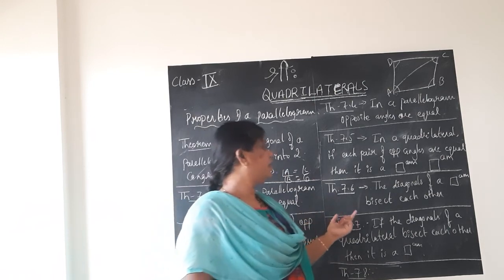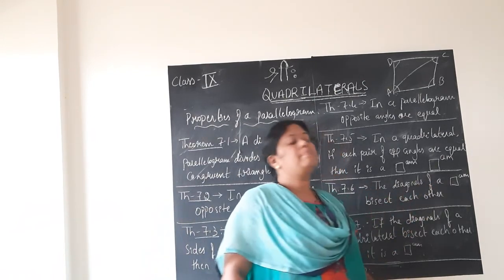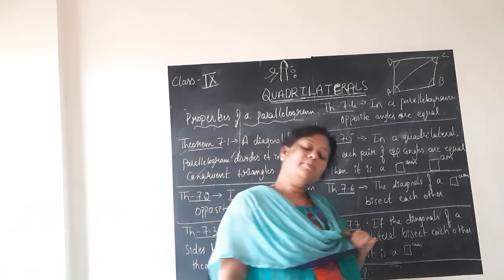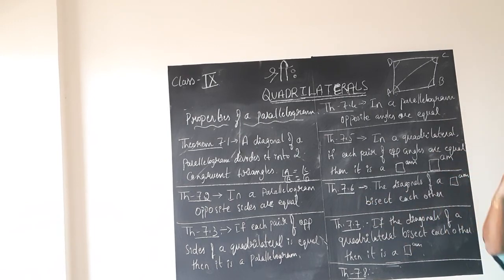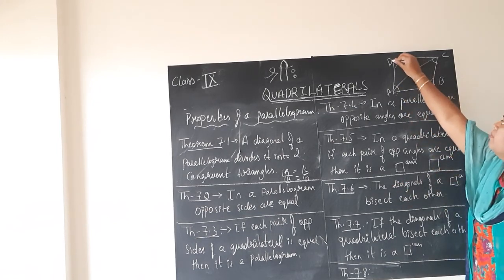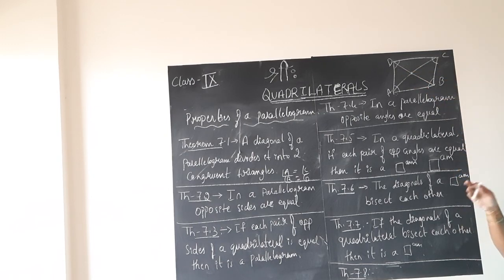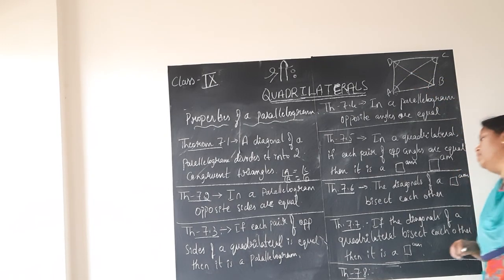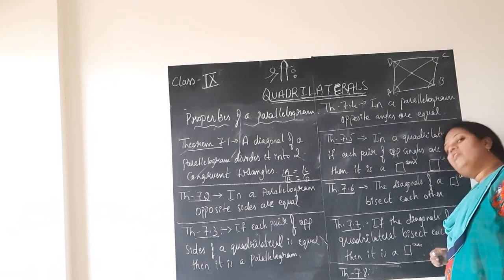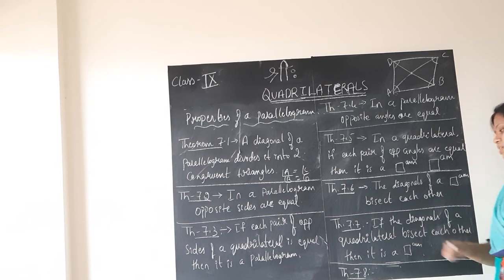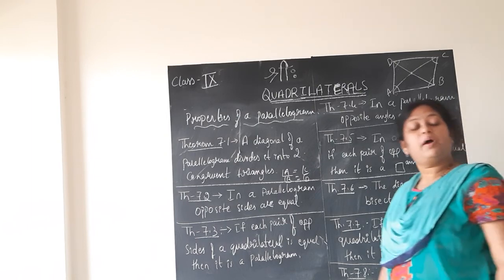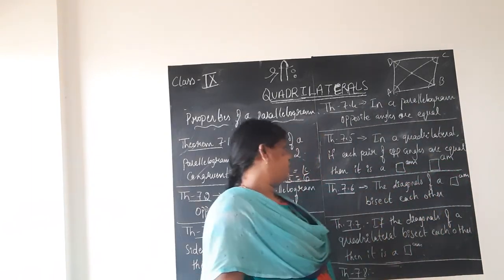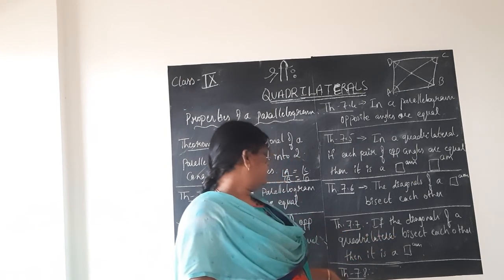Theorem 7.6 states that the diagonals of a parallelogram bisect each other. As I explained when discussing properties of a rhombus, in a rhombus the diagonals bisect perpendicularly, and similarly in a parallelogram the diagonals bisect each other. Two diagonals can be drawn in any quadrilateral, and in a parallelogram they bisect each other. Theorem 7.7 states the converse: if the diagonals of a quadrilateral bisect each other, then it is a parallelogram.